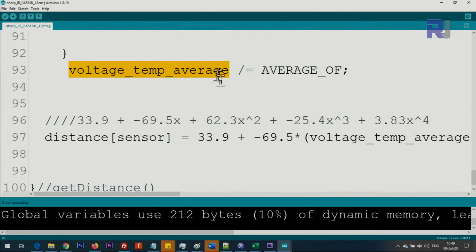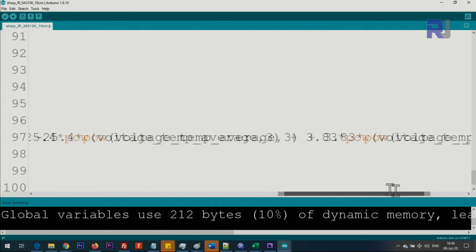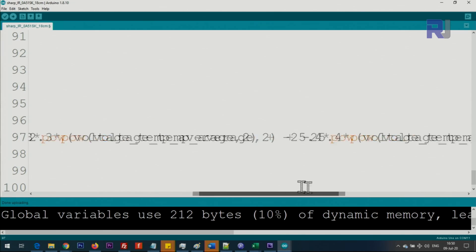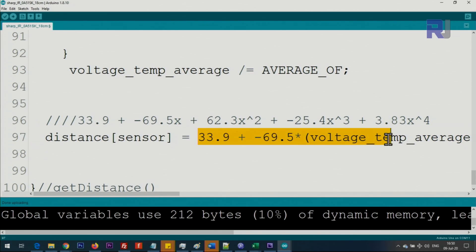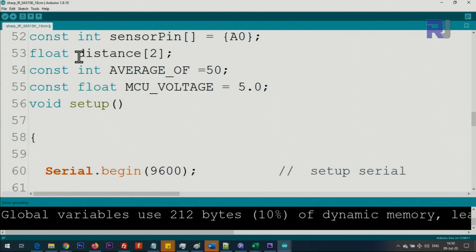Then we use the average calculated value to insert it into this equation of the line, the fitting equation. This value will be stored in the variable called 'distance' at this location. If this is 0 it will be for sensor 0, if it is 1 it will be for sensor 1, and so forth. This is just updating this value.